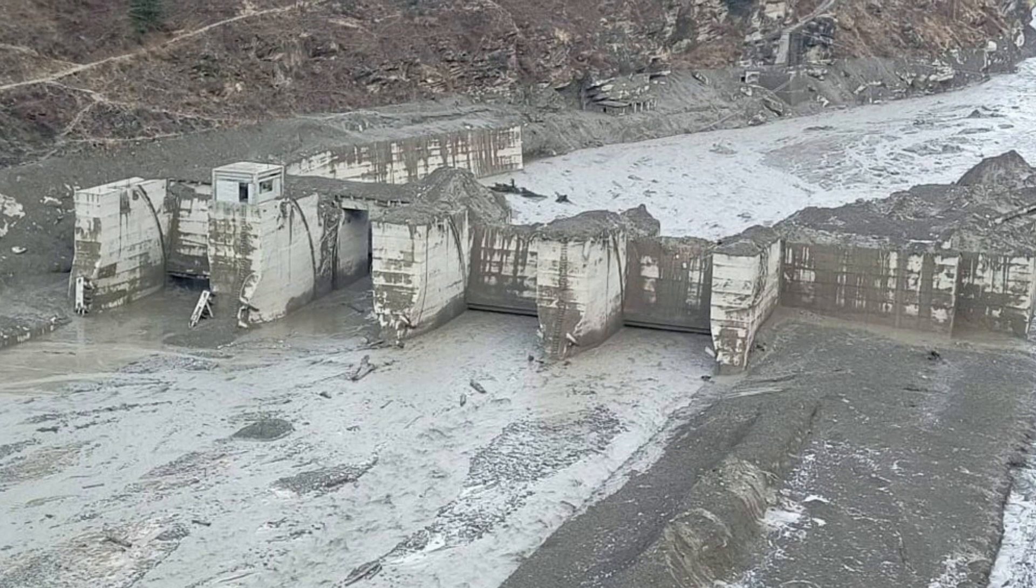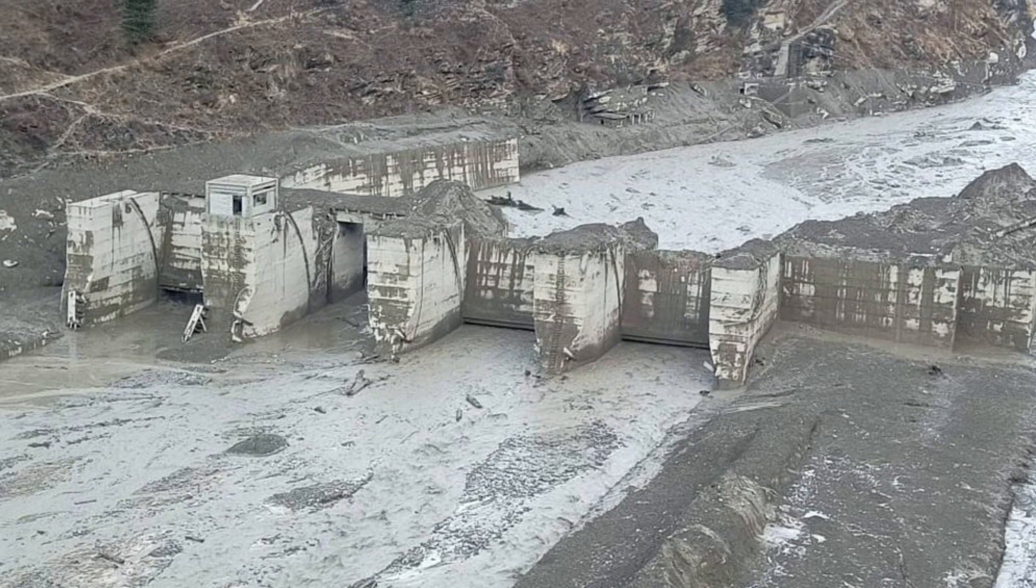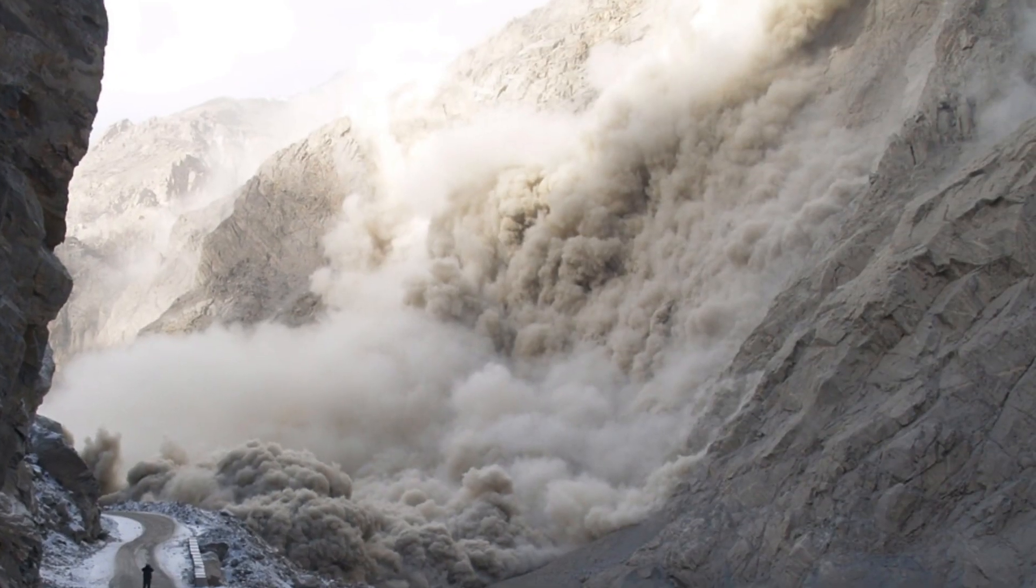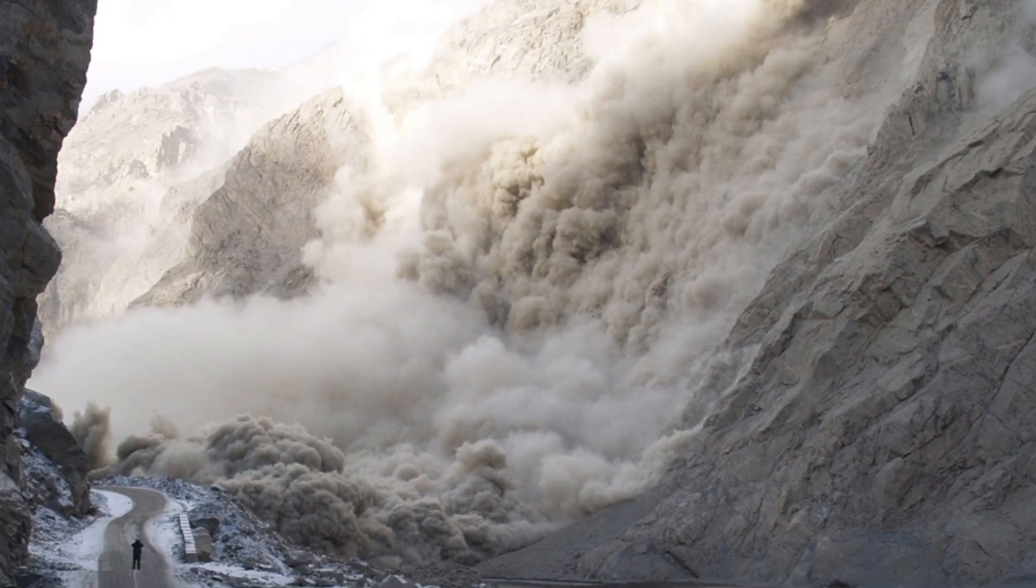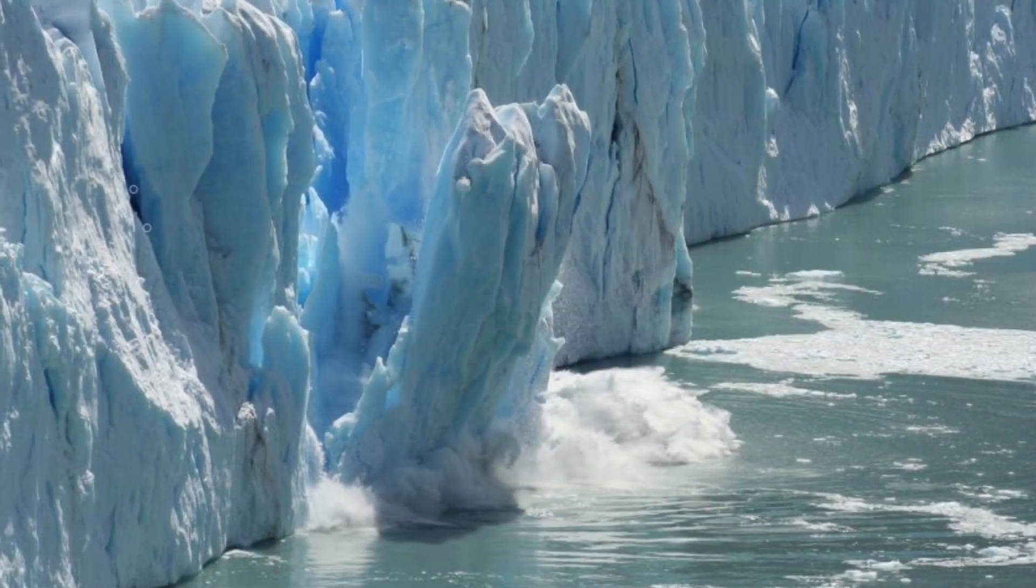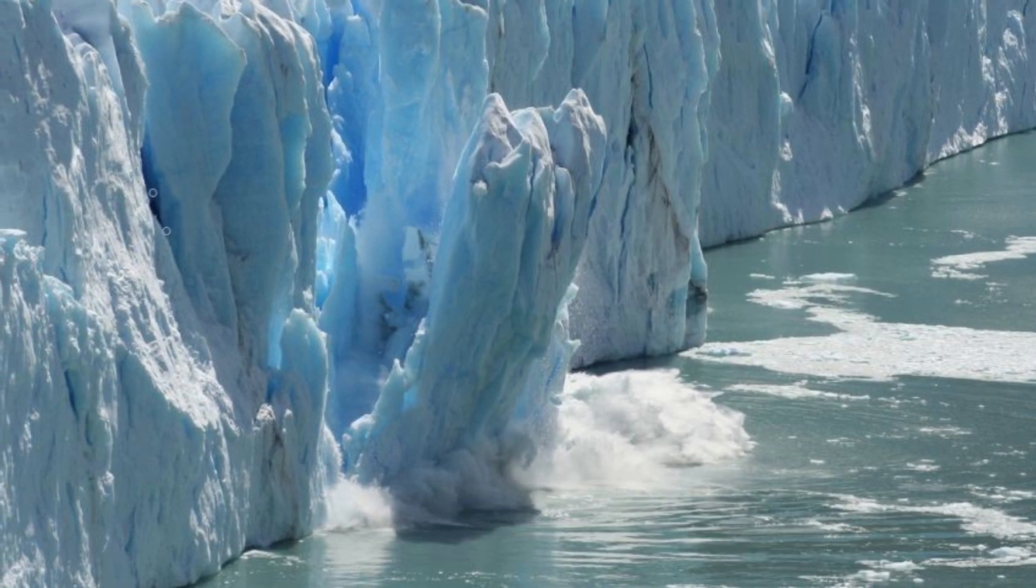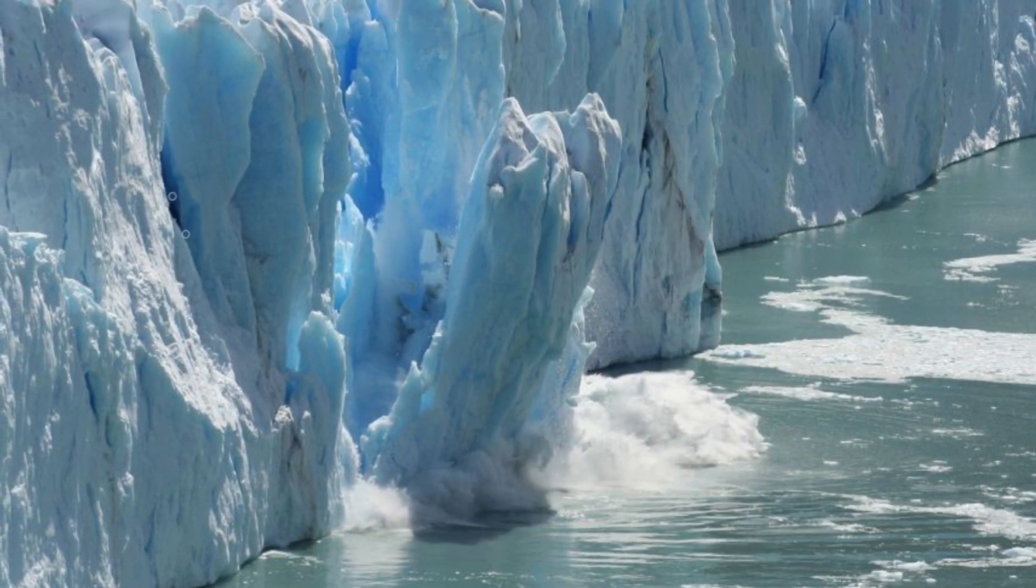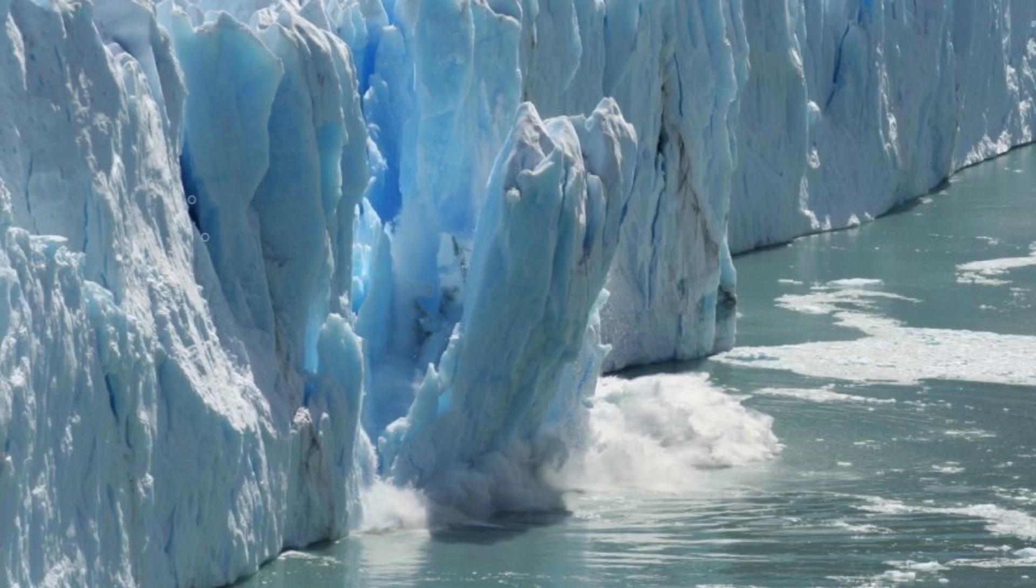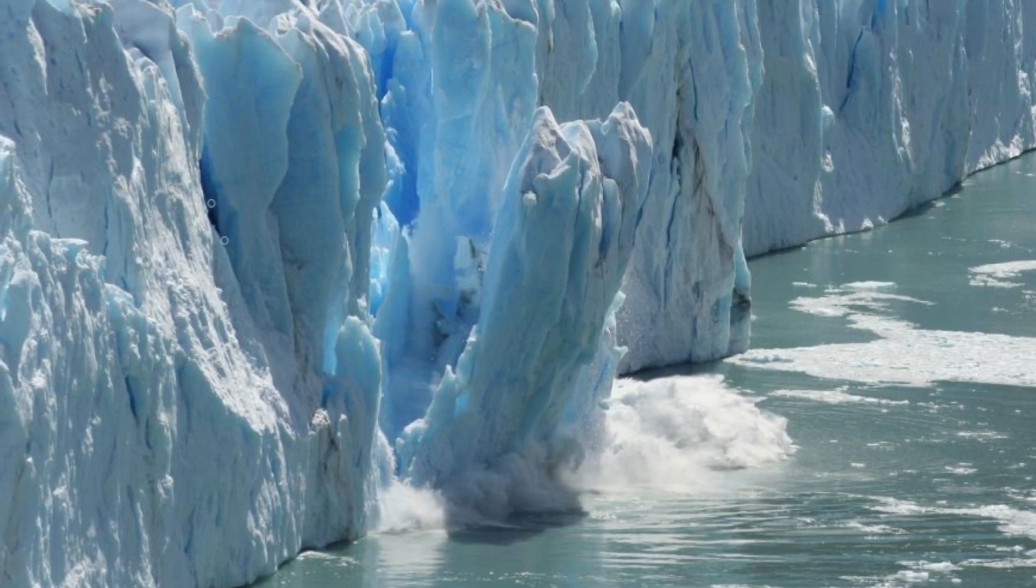People further down the river will get very little warning before the flooding hits them. This is one consequence of global warming. Another consequence is as the temperature rises, we will have melting of the glaciers. The melting of the glaciers may lead to cracks in the glaciers, leading to glacier bursts.